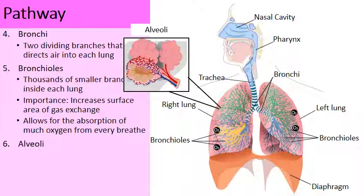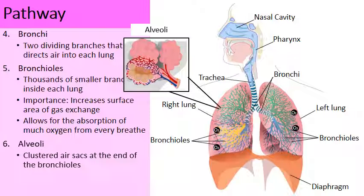At the tips of the bronchioles, there are clustered air sacs — if you use your imagination, it kind of looks like a cluster of grapes. These are called the alveoli, and this is where the magic of the respiratory system happens. There are thousands and thousands of alveoli located at the ends of the bronchioles.